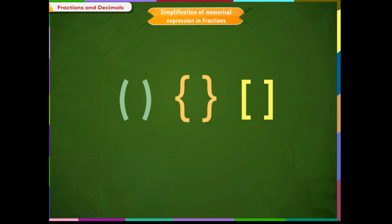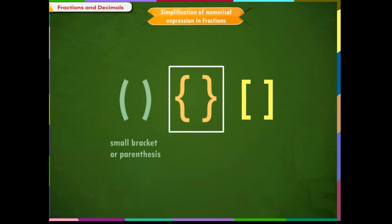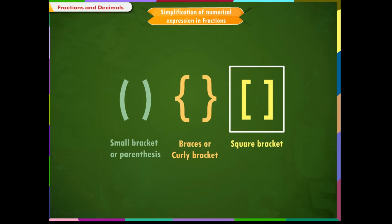If the brackets are present in the problem, we first simplify the brackets. There are three kinds of brackets: 1. We call this the small bracket or parenthesis. 2. This bracket is called braces or curly bracket. And 3. This is a square bracket.